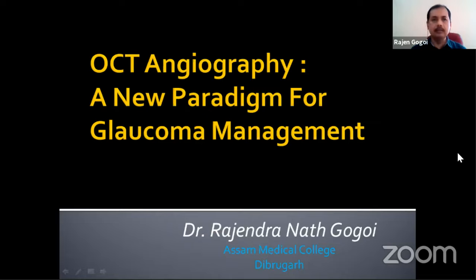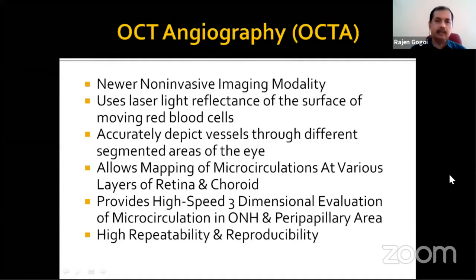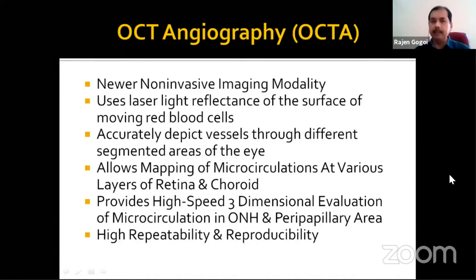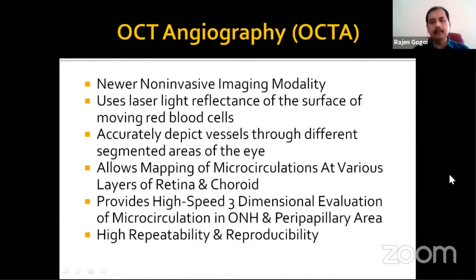Regarding OCT angiography, SD-OCT or SS-OCT uses light reflected from the surface of moving red blood cells in blood vessels. That is how it can accurately depict vessels through different segmented areas of the eye, providing mapping of microcirculation of various layers of the retina and choroid. A high three-dimensional evaluation of microcirculation of the optic nerve head area can be provided by OCT angiography, giving high repeatability and reproducibility.